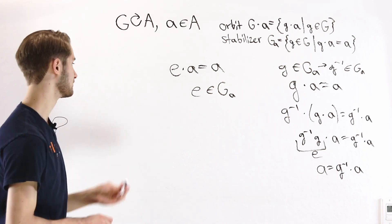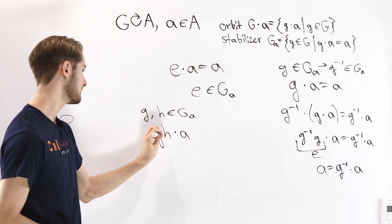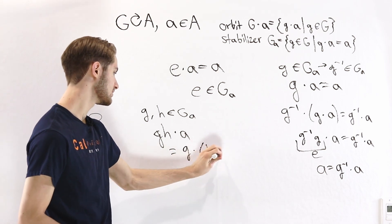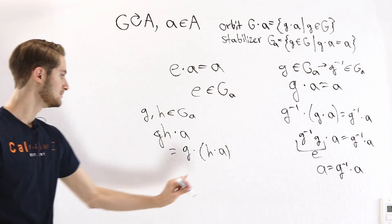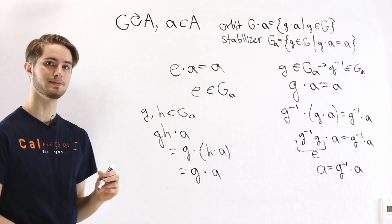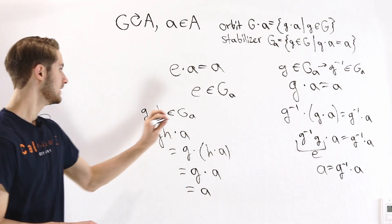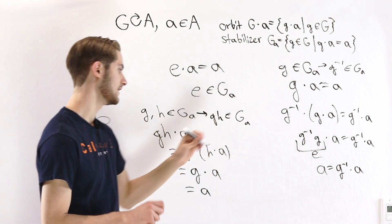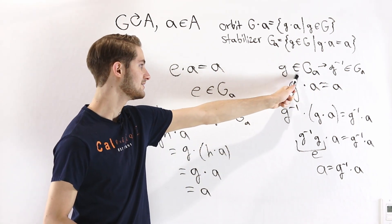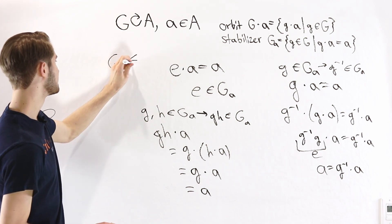The third condition to check is closure under multiplication. Suppose G and H are both in the Stabilizer of A. What is GH times A? A group action is always associative, so we can write this as G times (H times A). Since H is in the Stabilizer of A, H times A equals A, giving us G times A. Since G is also in the Stabilizer, G times A equals A. So GH times A equals A, and therefore GH is in the Stabilizer of A. We conclude that G sub A is a subgroup of G.